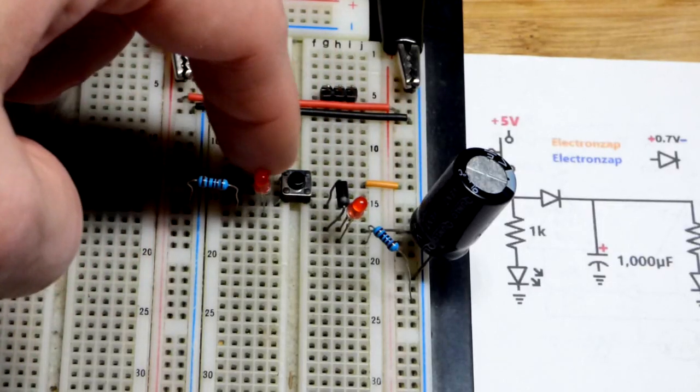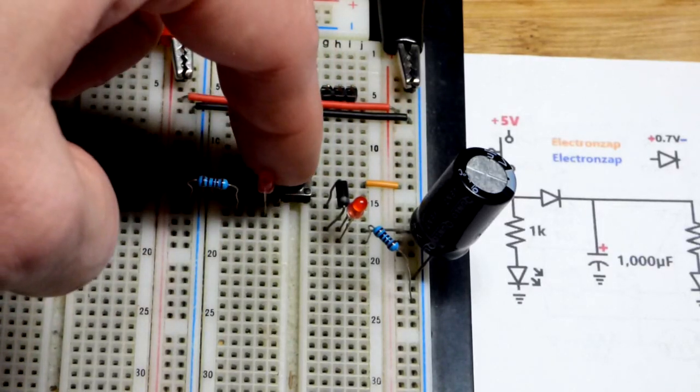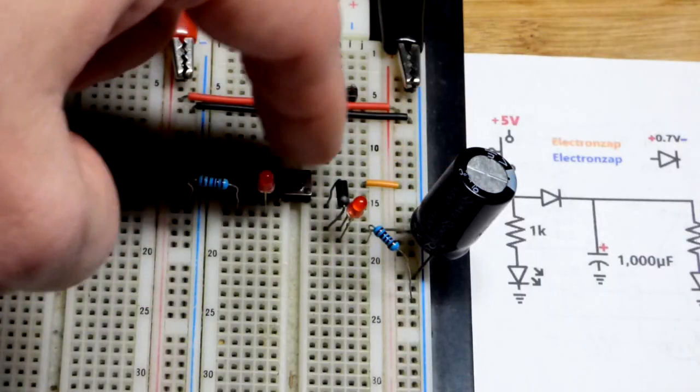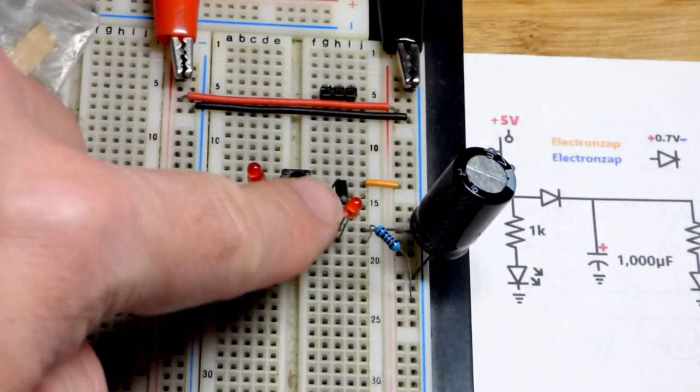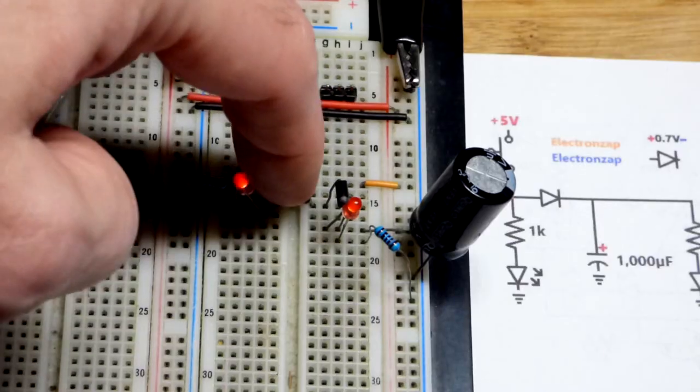So when I press the button, we have positive supply lighting the LED to the left, but also charging the capacitor and lighting the LED to the right, but through that diode, which does drop about 0.7 volts.